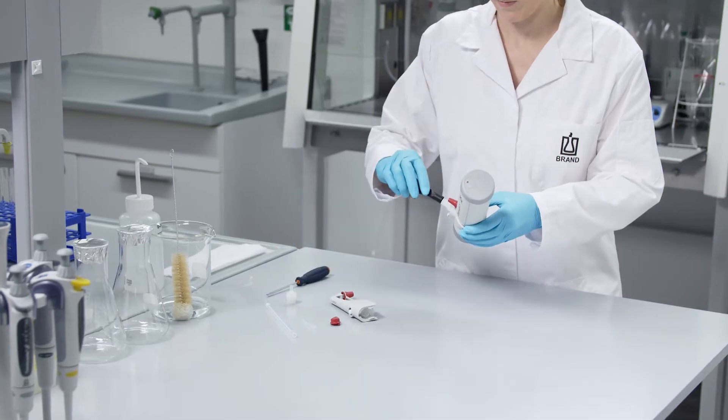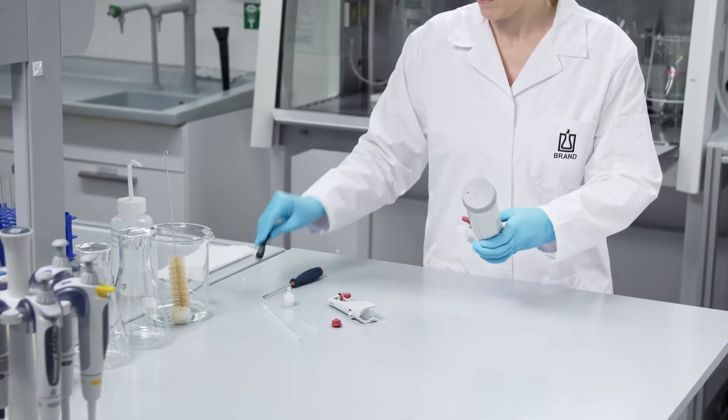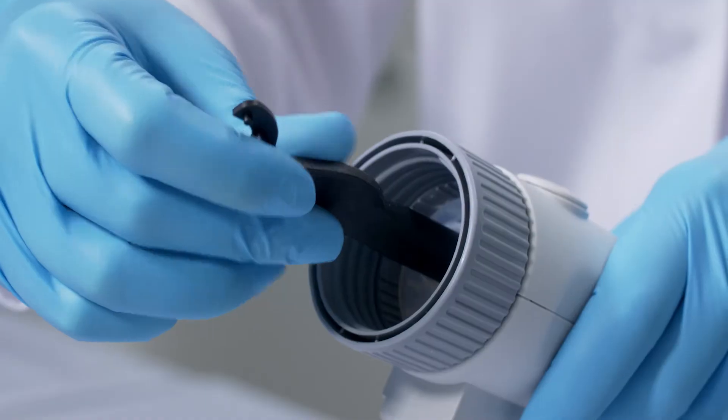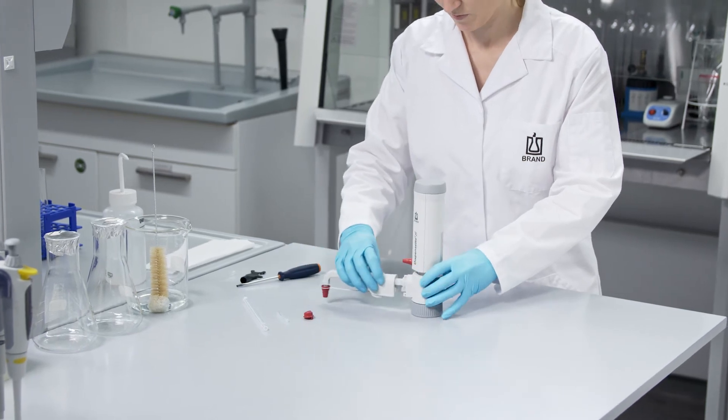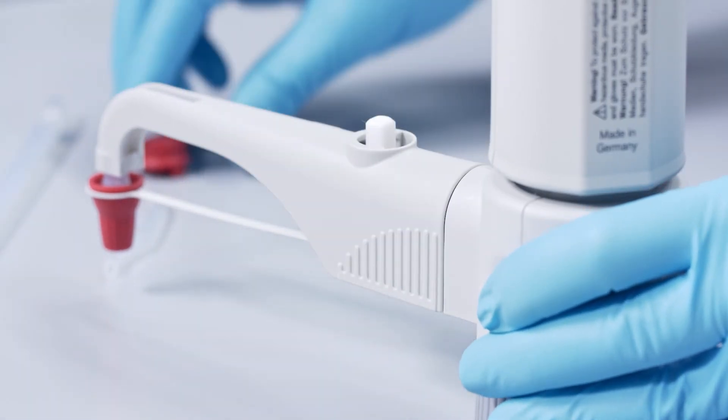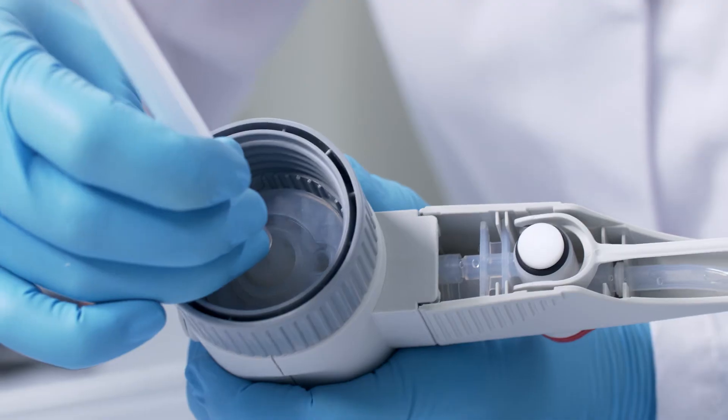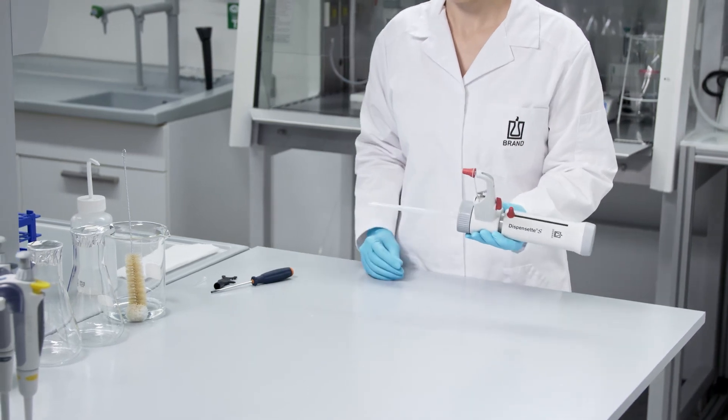Screw in the valves using the mounting tool and attach the discharge tube. Then attach the filling tube and the optional recirculation tube. Your Dispenset S is now ready for use again.